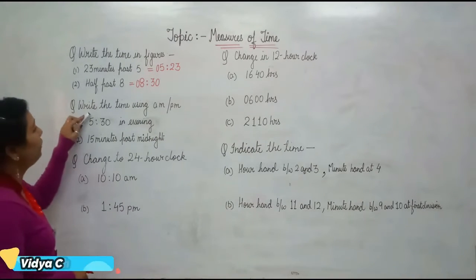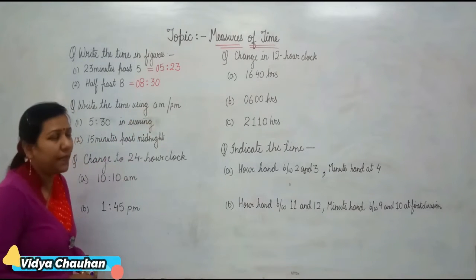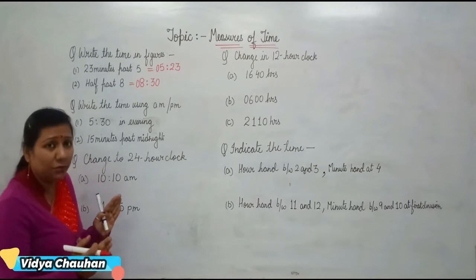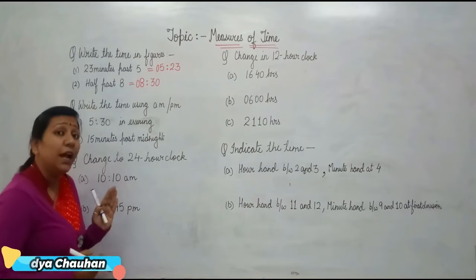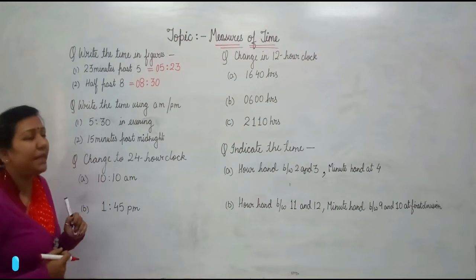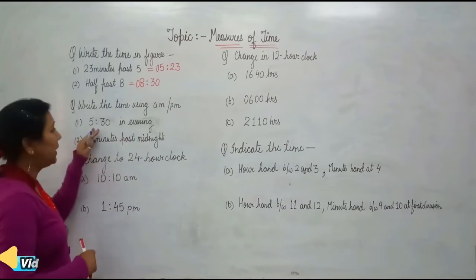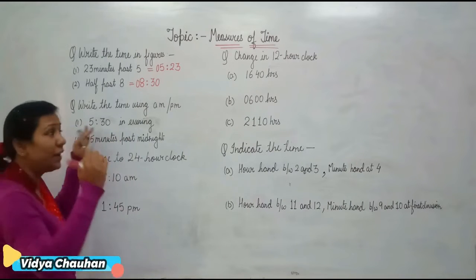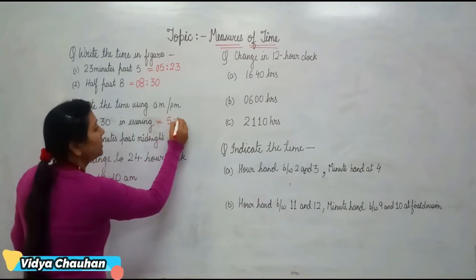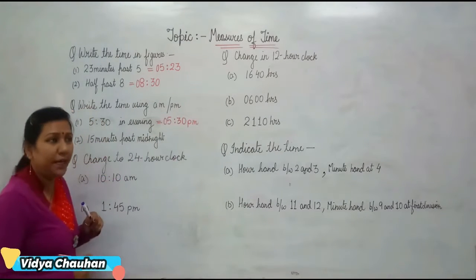Coming to the second question, in which you have to write the time using AM or PM. As I have already told you, if it is 12 midnight to 12 noon, the time is AM. And if it is 12 noon to 12 midnight, then it is PM. So 5:30 in the evening — this is the time between 12 noon to 12 midnight, so it will be 5:30 PM.